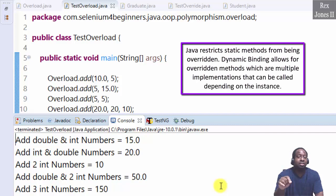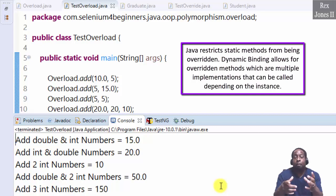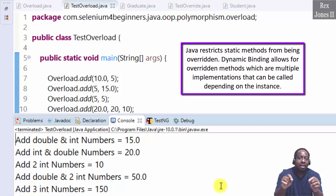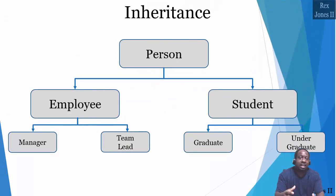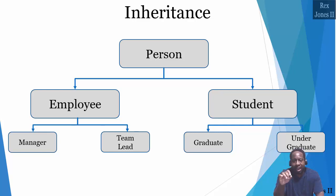Java restricts static methods from being overridden. Dynamic binding allows for overridden methods, which are multiple implementations that can be called depending on the instance. For example, let's think about the calculateGPA methods from the Student and Graduate classes that we covered in the previous session. For method overriding, we can use a separate implementation for Student and Graduate.